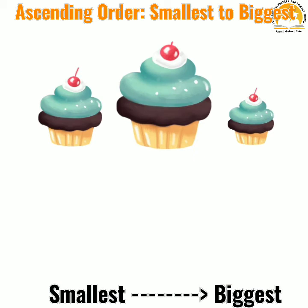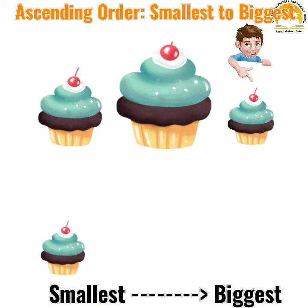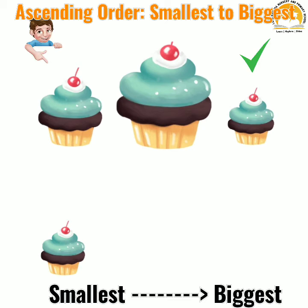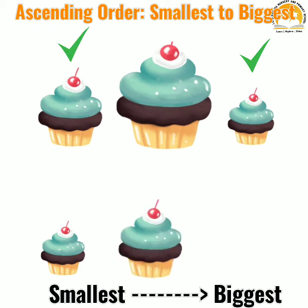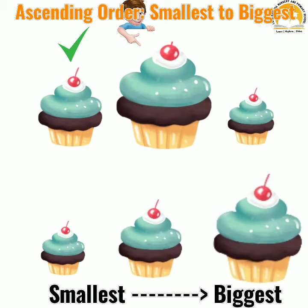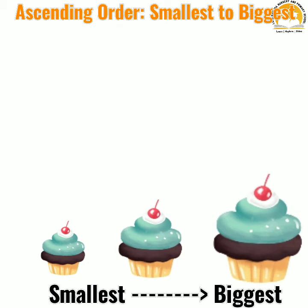Similarly, let us arrange this image of three cakes. The smaller cakes, the medium sized cakes, and then comes the bigger cakes. Thus, we have arranged them in ascending order, right?